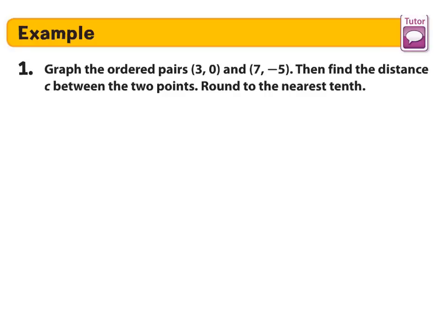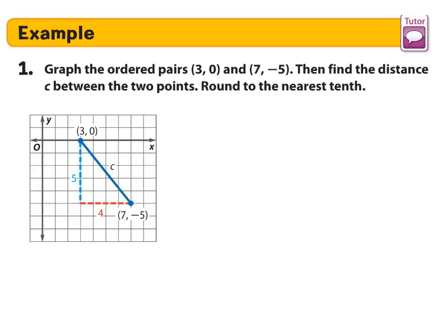Example 1. Graph the ordered pairs (3, 0) and (7, -5), then find the distance C between the two points, round to the nearest tenth. So first thing to ask us to do is to graph the ordered pairs. So here's a graph of the ordered pairs. So we have (3, 0), which is this point there, and (7, -5), that point there.